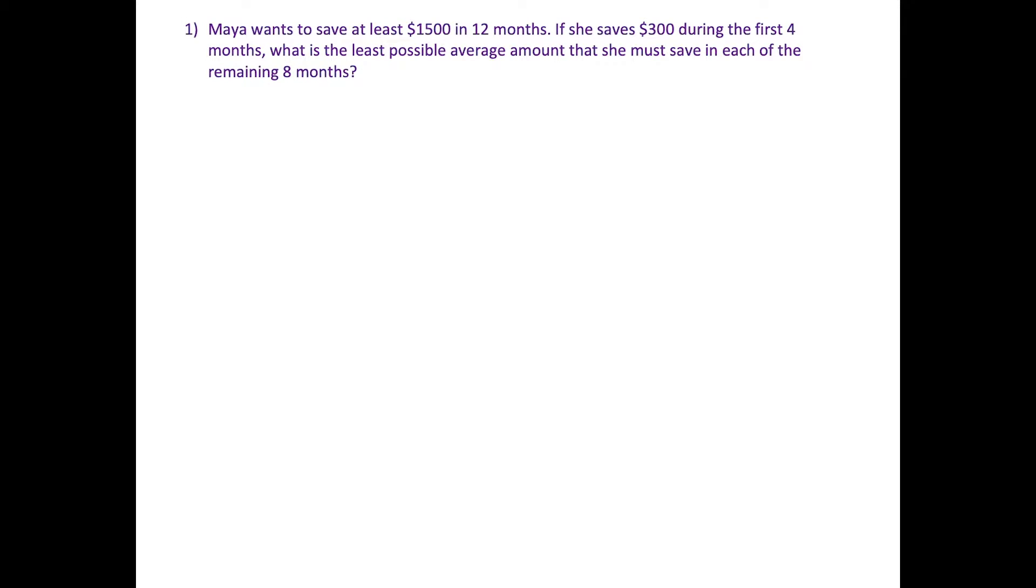Now take a moment to read through the first question. The first thing we could do here is highlight the important information. We have this girl Maya wants to save at least $1,500 in 12 months and we're told that she already saved $300 during the first four months. The actual question here is what is the least possible average amount that Maya has to save in each of the remaining eight months to reach her goal of $1,500.